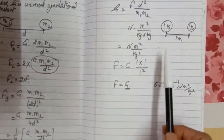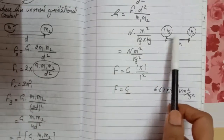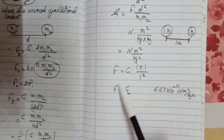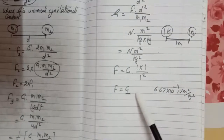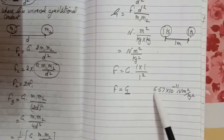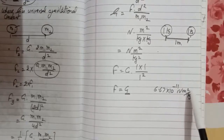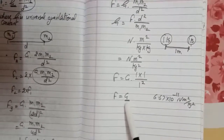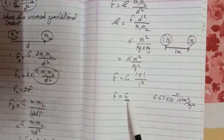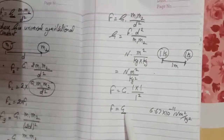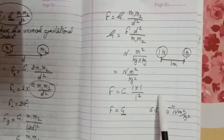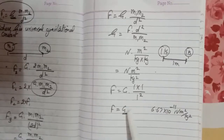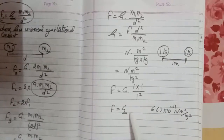So it means if we keep two objects at a distance of 1 meter, each having a mass of 1 kg, then the force of attraction acting between them is always equal to G. By experiment, we find that the value of G is equal to 6.67 × 10⁻¹¹ N·m² per kg². This value is constant throughout the universe — it does not change anywhere. It is the same on earth, on the moon, on the sun, or on other planets and stars. That is why it is called the universal gravitational constant.